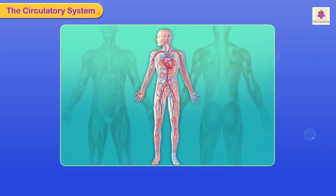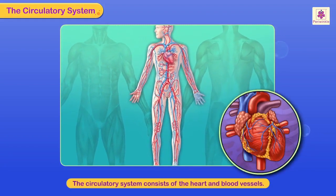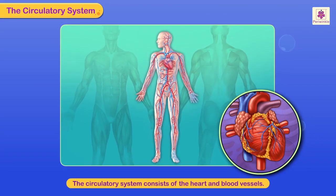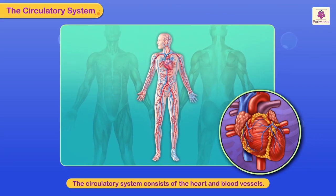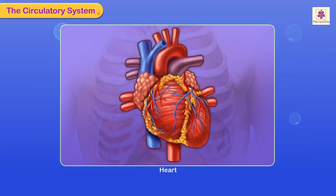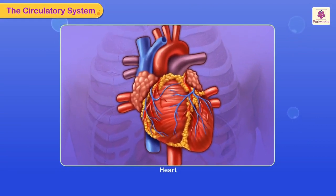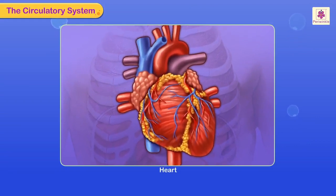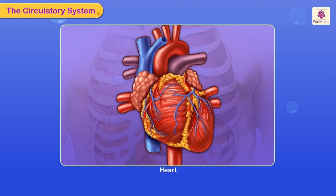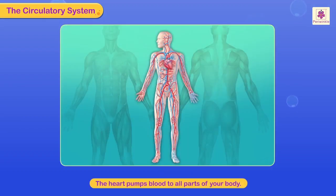The circulatory system consists of the heart and blood vessels. Your heart is the size of your fist. The heart works just like a pump — it pumps blood to all parts of your body.